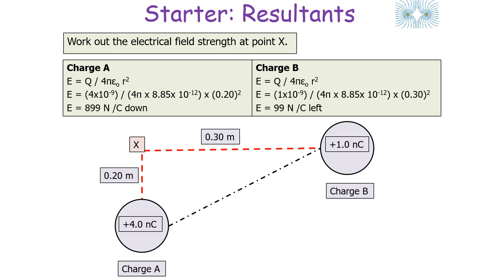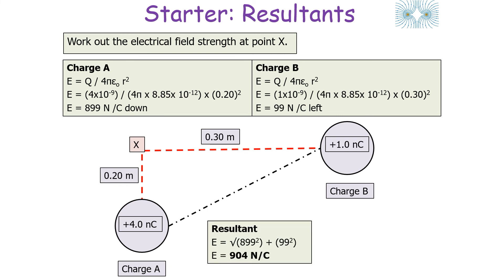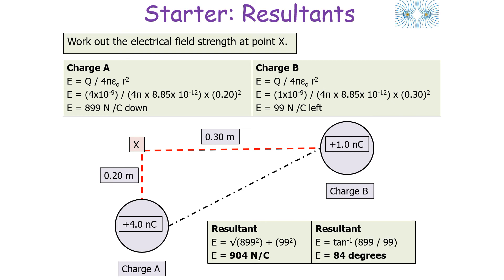Because the two field strengths are not in a straight line, we use the Pythagorean theorem to find the resultant. The resultant equals the square root of (899² + 99²), which works out to 904 N/C. In addition, we must state the angle at which the resultant is orientated. Using trigonometry, tan θ = opposite / adjacent = 899 / 99, so θ = tan⁻¹(899/99) = 84 degrees. The resultant electrical field strength is therefore 904 N/C at 84 degrees to the vertical.